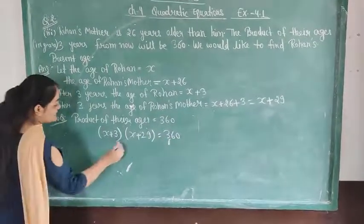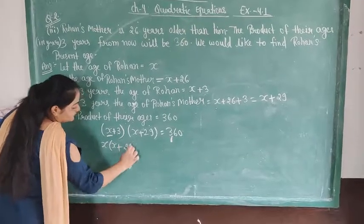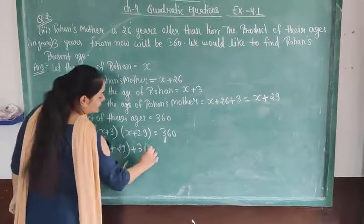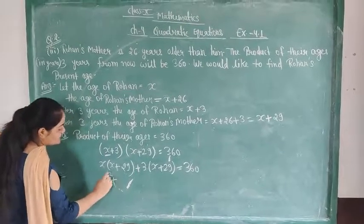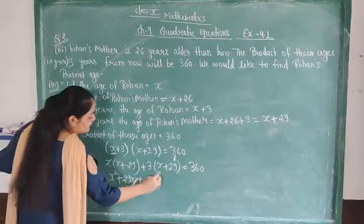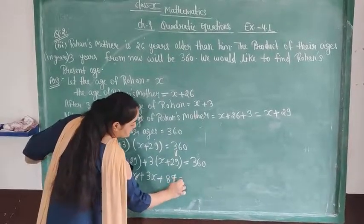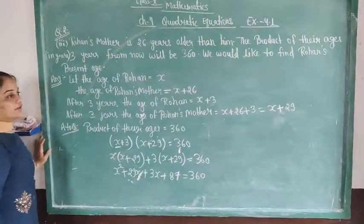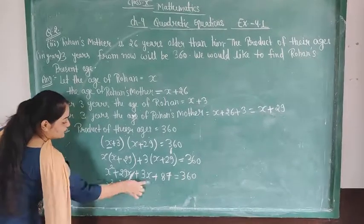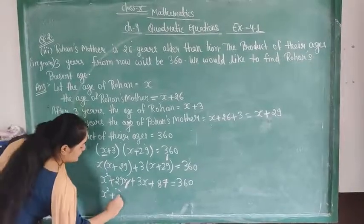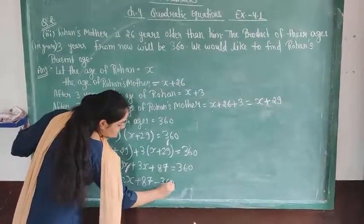Now we have x squared plus 3x plus 29x plus 87 is equal to 360. This becomes x squared plus 32x plus 87 minus 360 is equal to zero, which gives us x squared plus 32x minus 273 is equal to zero.